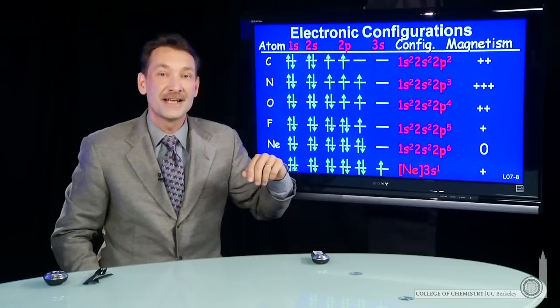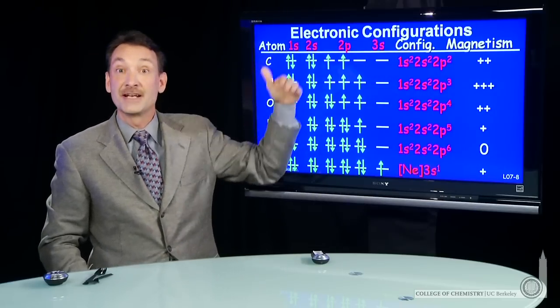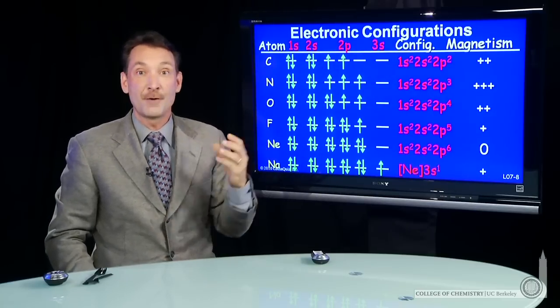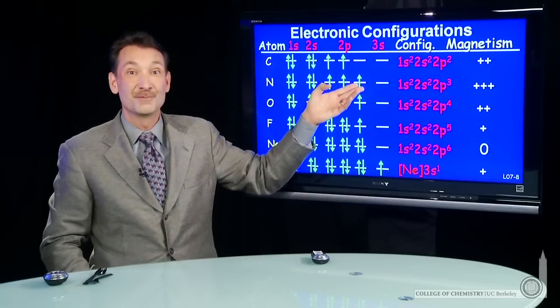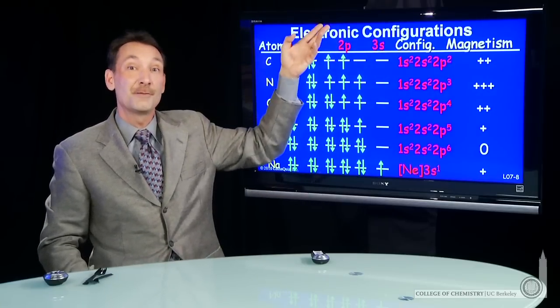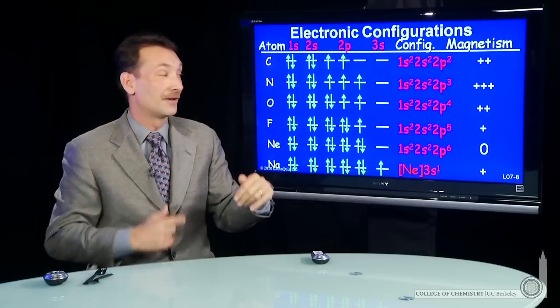Which is more magnetic than boron. In fact, that's how we can tell Hund's rule is being followed. Nitrogen is more magnetic than carbon, which is more magnetic than boron. So the spins are going in parallel.